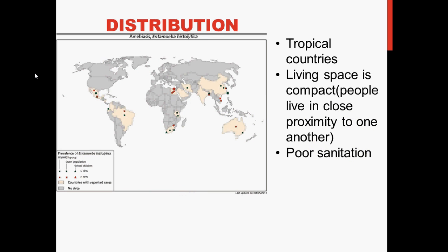Regarding distribution, amoebiasis commonly occurs in tropical countries where living spaces are compact and people live in close proximity to one another. Poor sanitation also contributes to this condition.